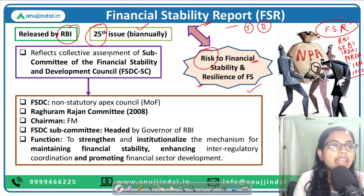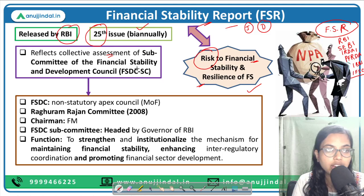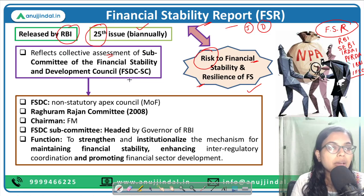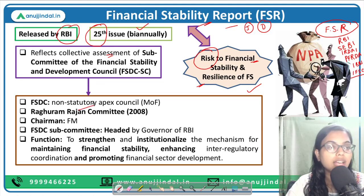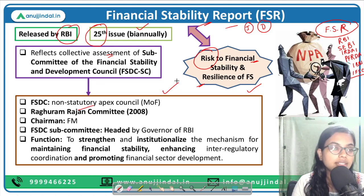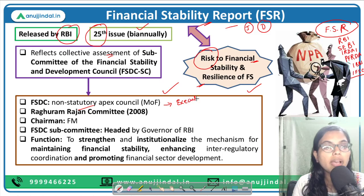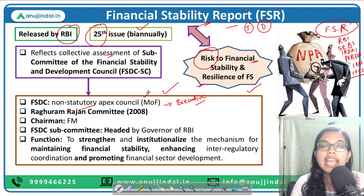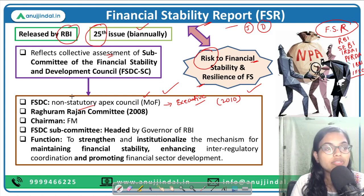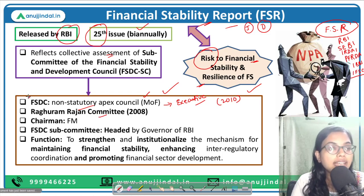This report reflects the collective assessment of the subcommittee of the Financial Stability and Development Council, or FSDC. The FSDC is a non-statutory apex council under the Ministry of Finance — non-statutory because it has been formed by an executive order, not by any law. It was formed under the Ministry of Finance in the year 2010. It was first mentioned in the Raghuram Rajan Committee recommendations.